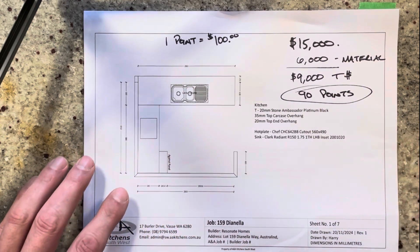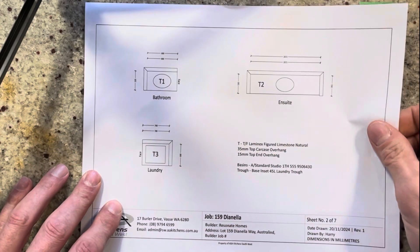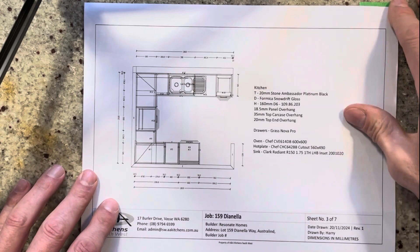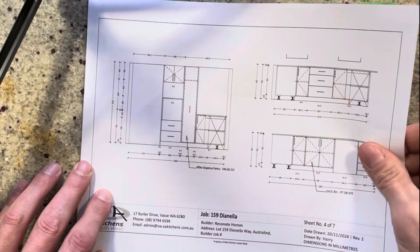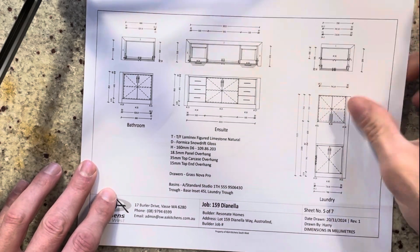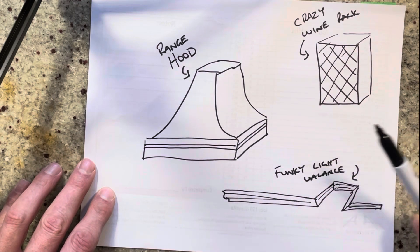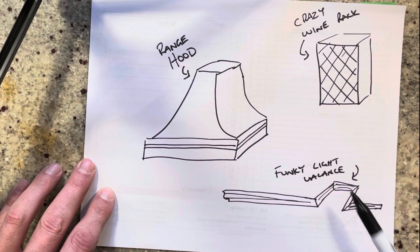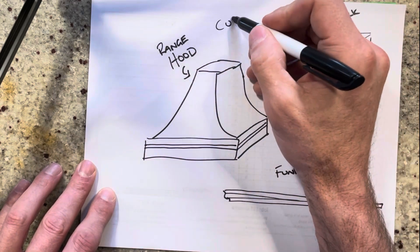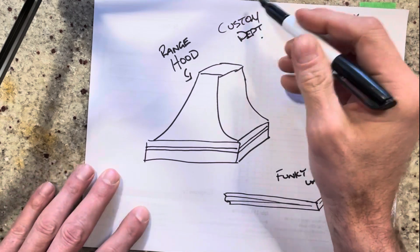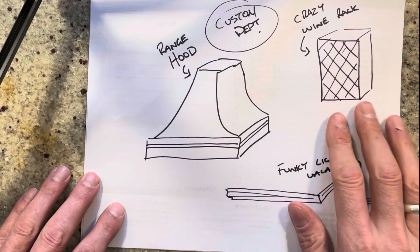Let's have a quick look at this job. It's three elevations of a kitchen with an ensuite, a laundry, and a bathroom — pretty typical stuff. There are the elevations where we can count boxes, the laundry, bathroom, and ensuite. I've also added some technical features from our engineering department: a range hood, a wine rack, and some funky light valances. Those are going to go to your custom department.